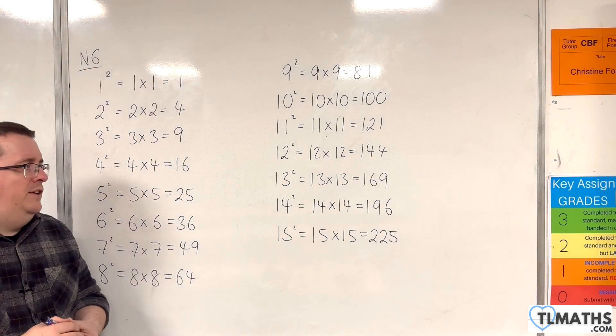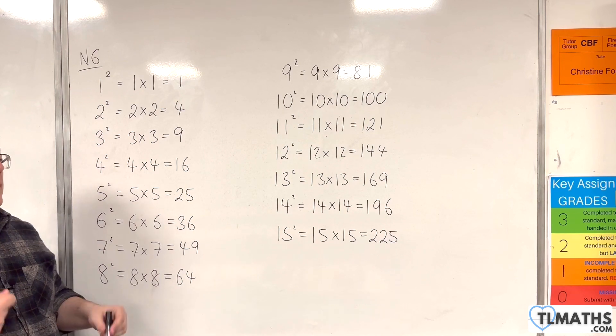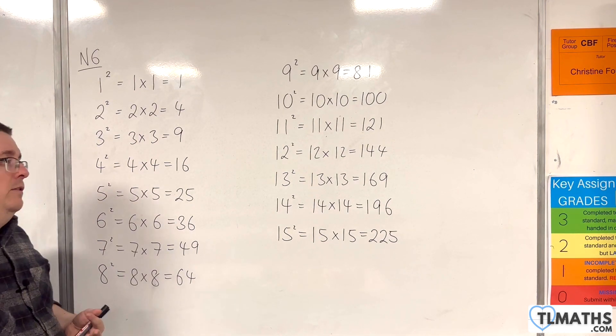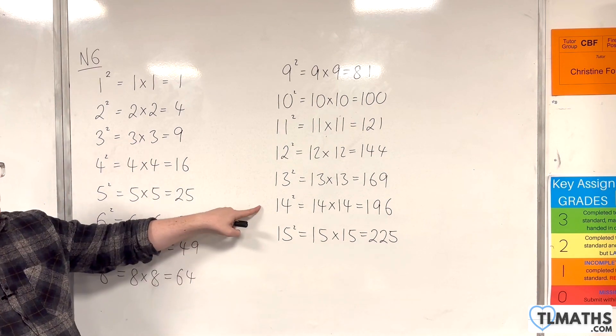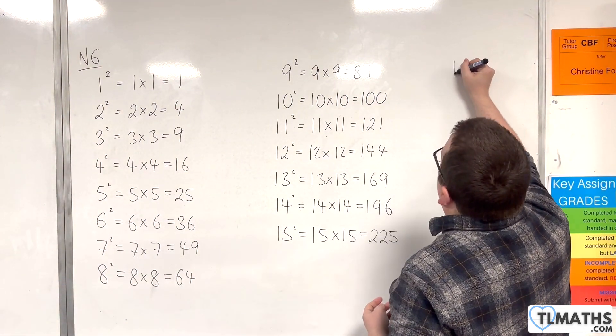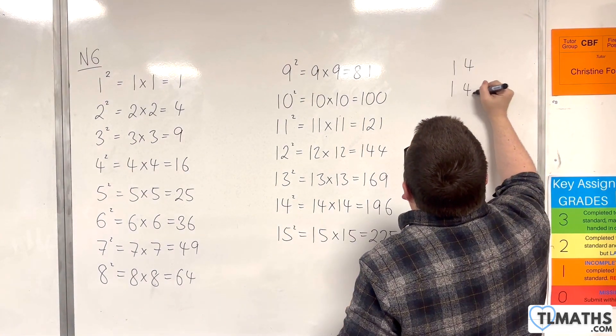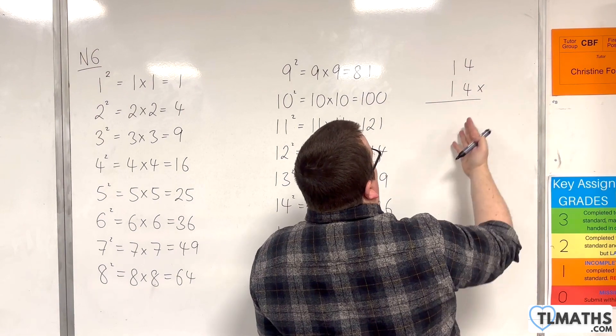So you need to make sure you know your square numbers. Some of these you're probably going to be able to work out. So if you know how to do your long multiplication and you needed what 14 squared was, then you could always do 14 times 14, as we've gone through already in this playlist, and just do it longhand.